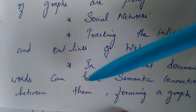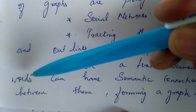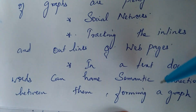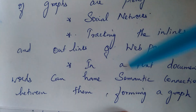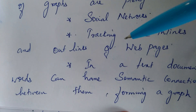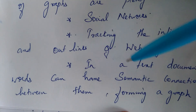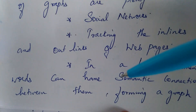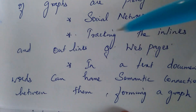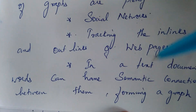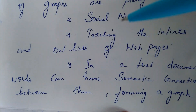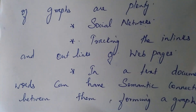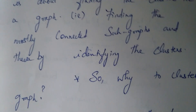In natural language processing, we can also represent a text document as a graph, where nodes are formed by words and semantic connections between words form the edges. For example, in the sentence 'The government declared holidays today,' instead of just taking the words alone, if we find the semantic connections between words and build an application on top of that representation, it becomes more efficient.